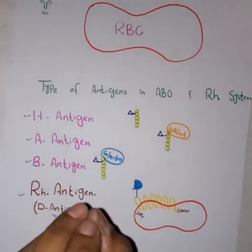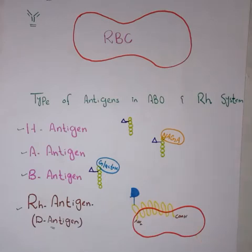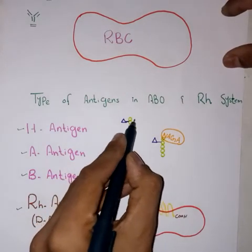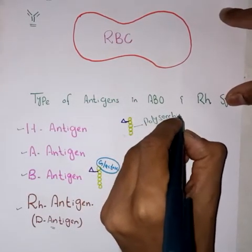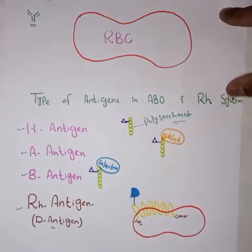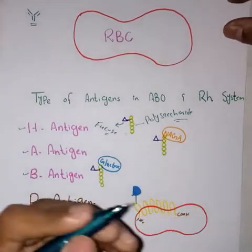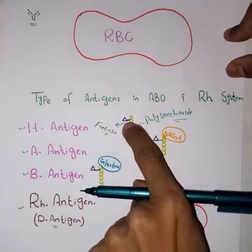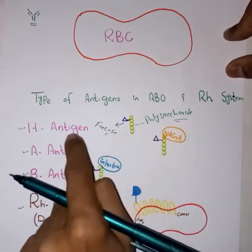First, let me tell you what is H antigen. H antigen is present on all types of blood groups — whether it is A, B, A positive, A negative — all types of blood groups must have this H antigen. H antigen is basically a polysaccharide chain, and attached to this polysaccharide chain is a sugar called fucose. Just like lactose and mannose, fucose is another type of sugar attached to this polysaccharide chain. Collectively, this is called H antigen.